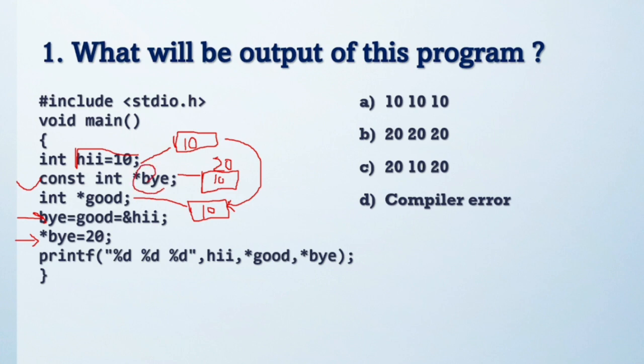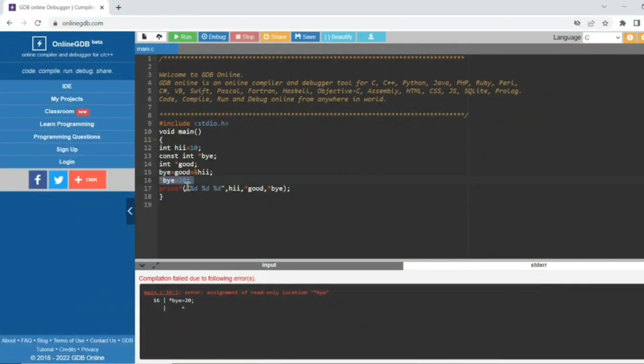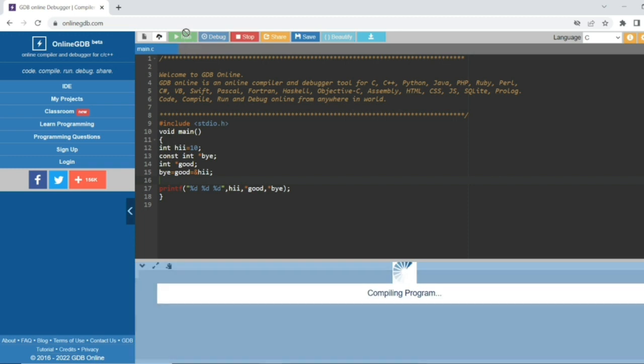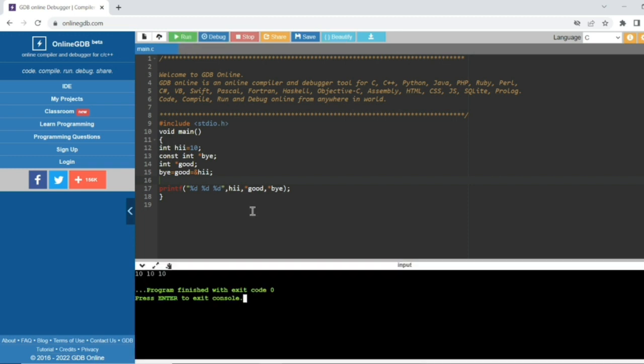But this line generates error because we can't change the value of this pointer because this is constant. That's why it generates error. If you want to get output, you need to remove this line and see output is 10, 10, 10. This is the very important point here.